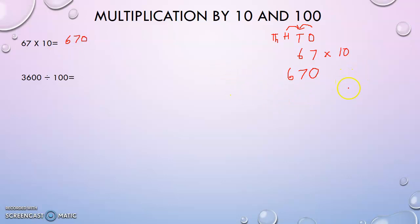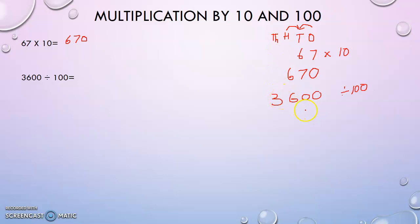Similarly, to do division by ten, shift the digits one place to the right. Division by hundred means shifting two places to the right. So if you are given three thousand six hundred and have to divide it by hundred, shift two places to the right — the digit in the thousands place moves to the tens place. So we get thirty-six.